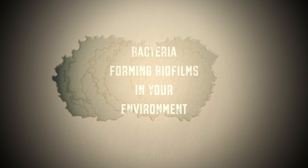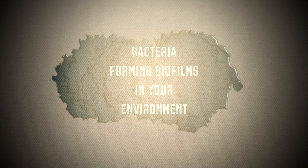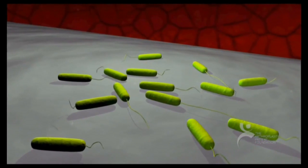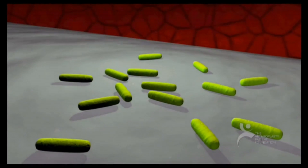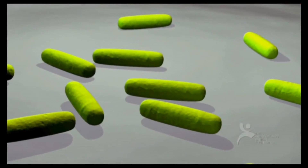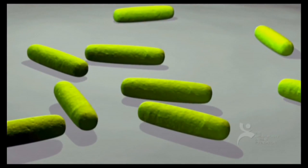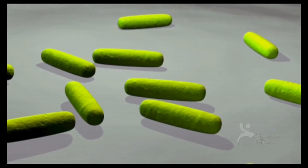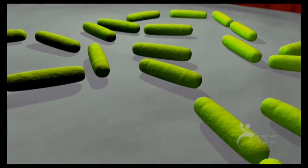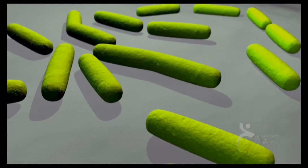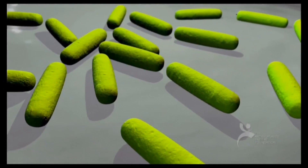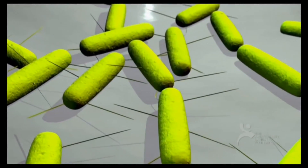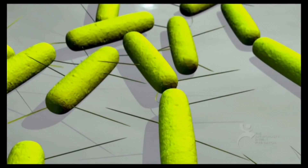Bacteria forming biofilms in your environment. Biofilms form when planktonic or single bacterial cells bind to surfaces and begin to adhere and replicate in place. The bacteria then begin to bind to each other, forming a complex structure.